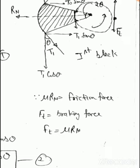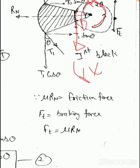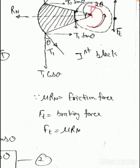When the wheel rotates in the anti-clockwise direction, the angle between the block sides is 2θ. So the friction force acts in the direction opposite to the rotation of the wheel. The braking force Ft and the frictional force F is equal to μRn. F is the frictional force equal to μRn acting in the upward direction when the wheel rotates anti-clockwise.